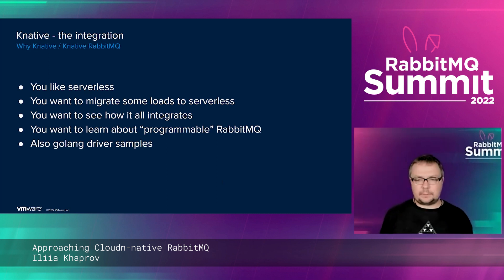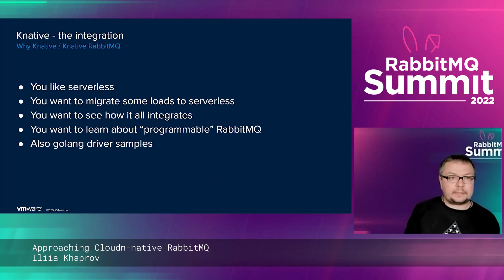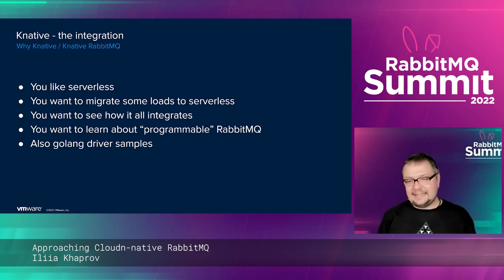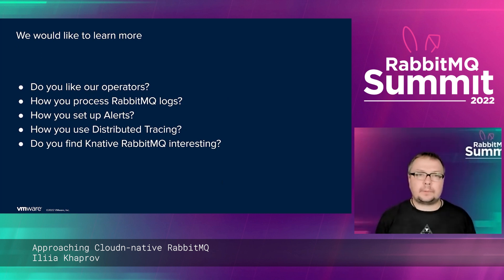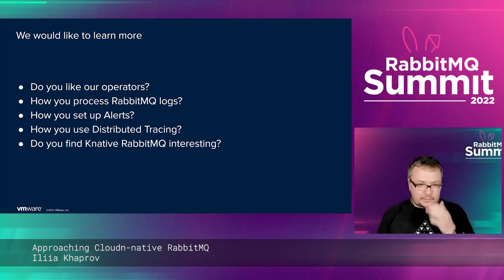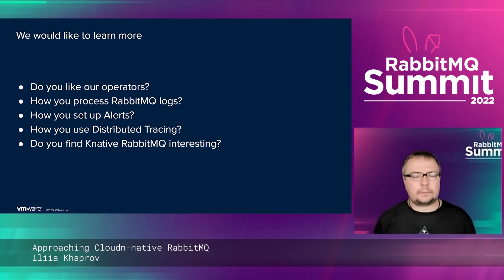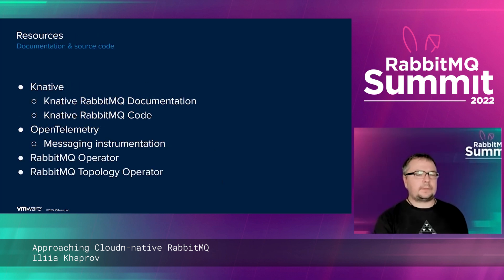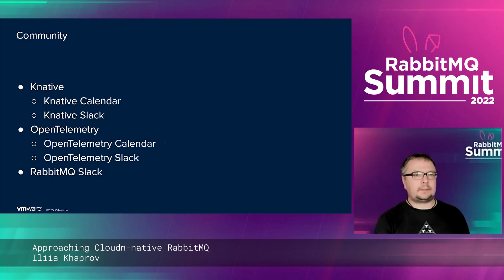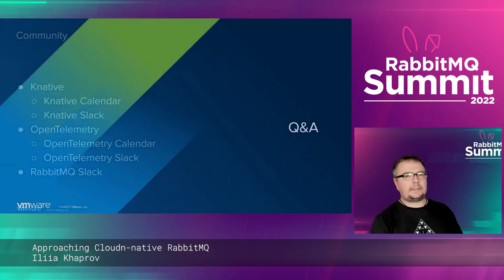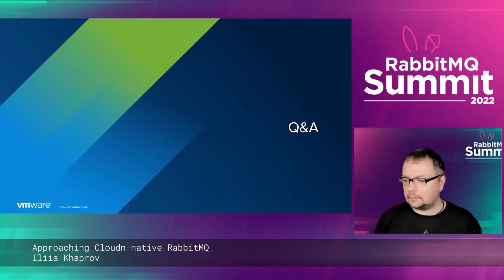If you want to learn about programmable RabbitMQ — how to manage topology from within Kubernetes and how to use the Go AMQP driver — we'd like to hear from you. We want to know how you like our operators, how you process RabbitMQ logs, how you set up alerts, whether you use distributed tracing, and what you think about Knative. Alerts is a really hot topic because we want our operators to be smarter. Please reach out on Slack, GitHub, or email. Slides with links will be sent to the organizers. Thank you for watching and listening.